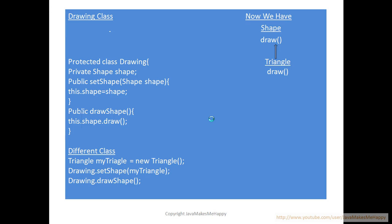As you can see, in the Drawing class we have defined one protected Drawing class with a Shape member. In a dependent class we define Triangle myTriangle = new Triangle() and create an object. Then drawing.setShape(myTriangle) calls the Drawing class, supplying the triangle reference. Then drawing.drawShape() calls the draw shape method to draw a triangle. Now shape.draw() refers to that triangle's draw method.